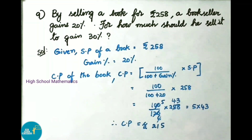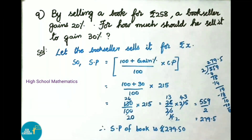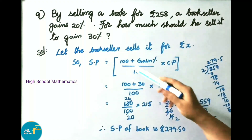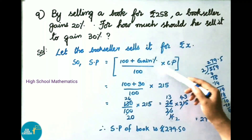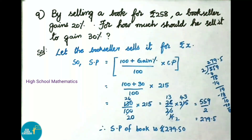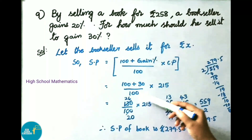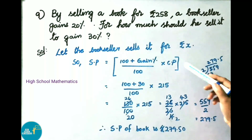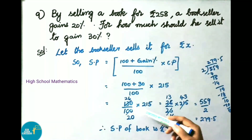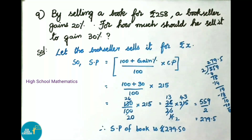Now let us find at what price the book must be sold to get a gain of 30 percent. Selling price equals (100 plus gain percent) by 100 into cost price. That equals 130 by 100 into 215. Simplifying: 5 table 20 times 100, so 130 by 100 reduces to 26 by 20, then into 215.